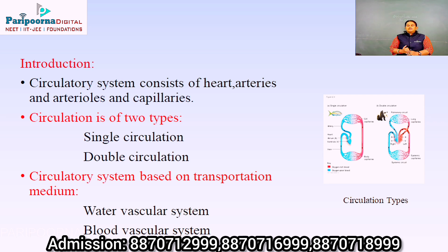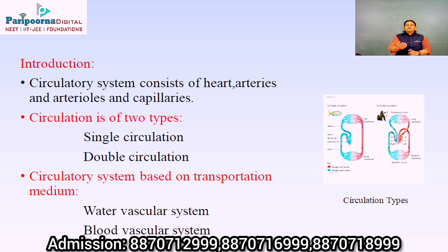The circulatory system is mainly of two types: single circulation and double circulation. In single circulation, blood flows through the heart only once — this is found in invertebrates and underdeveloped organisms. In double circulation, blood flows through the heart twice. Examples of double circulation include amphibians, reptiles, and mammals.